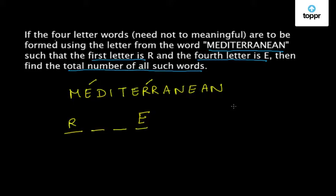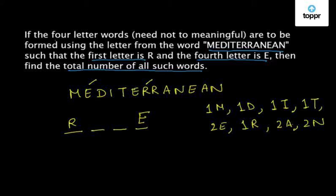We have been left with one M, one D, one I, one T, two E, one R, two A, and two N. Now we have to form four letter words using these letters.